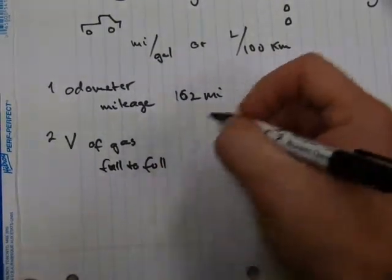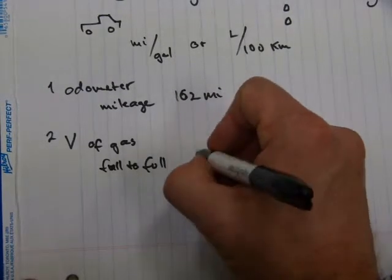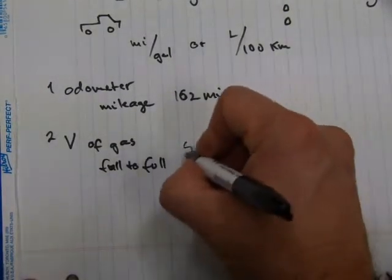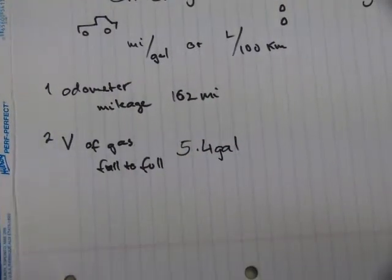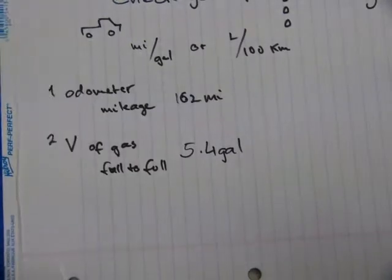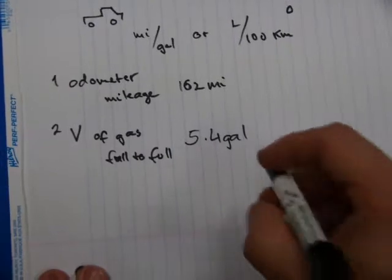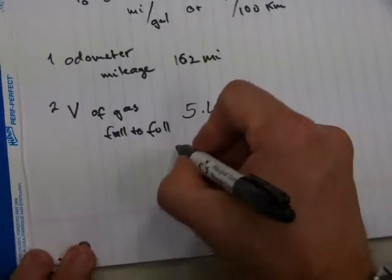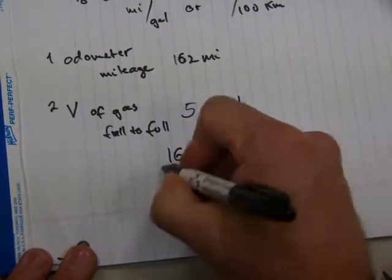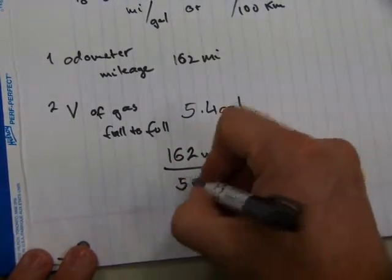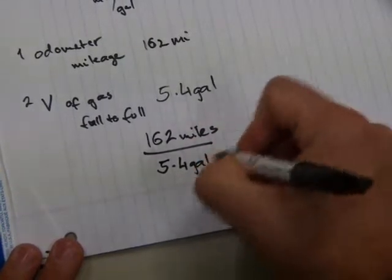And when you do so, you can see on the gas station's counter that maybe you had 5.4 gallons of fuel consumed by the vehicle over the same 162 mile distance. So what you do then with your calculator is you do one division, 162 miles divided by 5.4 gallons.